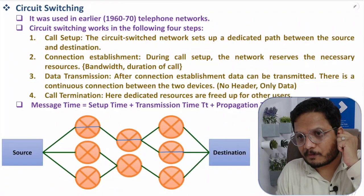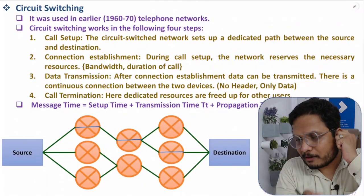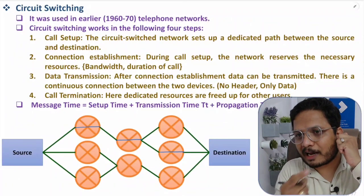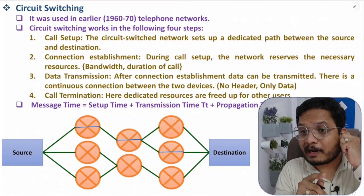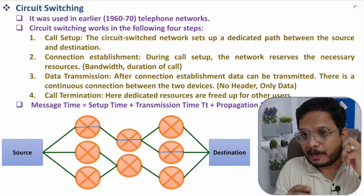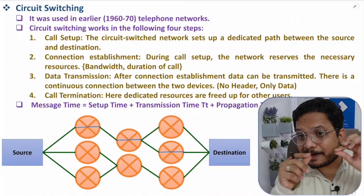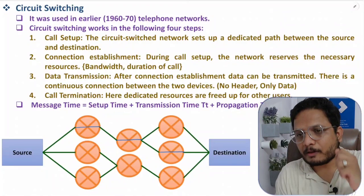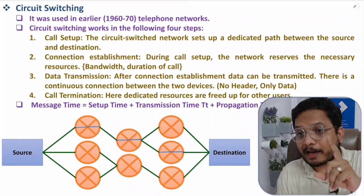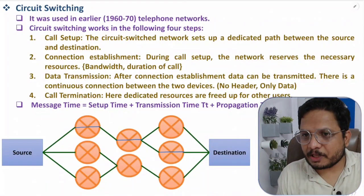For example, if I wanted to communicate with somebody in the US in the 1960s, I would call the network admin. I would tell the network admin I want to communicate to somebody in California. The network admin would then establish a setup and provide a dedicated path between source and destination. Once the path is provided, the two people can communicate, and when the call ends the network admin terminates it.